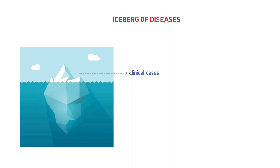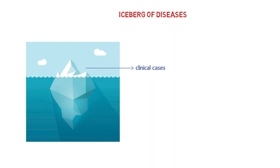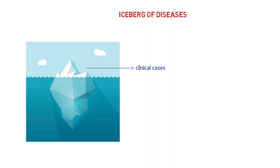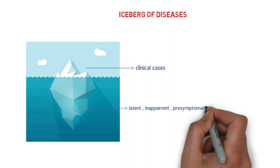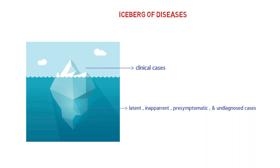The tip of the iceberg represents what the clinician sees, and the submerged part is explored and made visible by the epidemiologist. That is, the submerged part tells of latent, inapparent, pre-symptomatic and undiagnosed cases. The large hidden part of the iceberg constitutes the mass of unrecognized disease in populations and determines the fate of any disease control program.